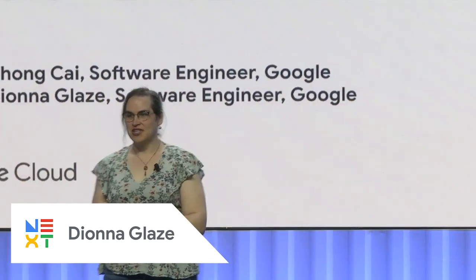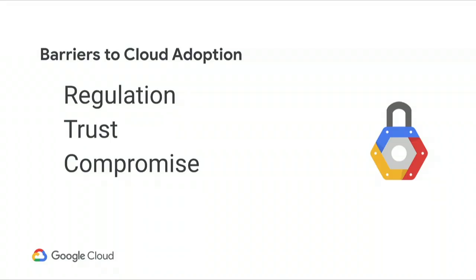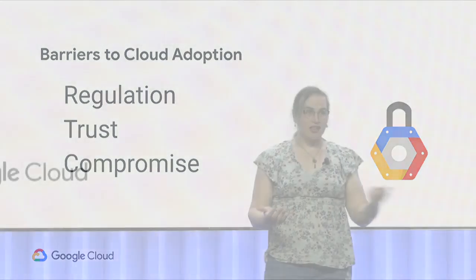Hi, thanks for sharing your lunchtime with me. I'm going to tell you about this cool stuff that we're working on after I tell you why. Some potential customers have shared with us that there are some barriers for them moving their workloads to a cloud instead of on-prem. The biggest three factors are regulation, trust in companies, and compromise, and what can happen to the data that is on other people's machines.